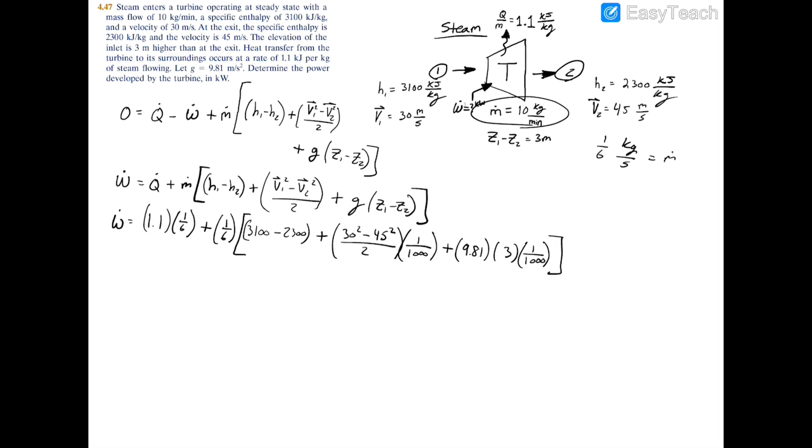So now if you plug this into your calculator, you'll have that the power W dot equals 133.43 kilowatts. Because the power is positive, that means the turbine is generating power, unlike something like a compressor or pump, which would have a negative power because those are power consumption devices.